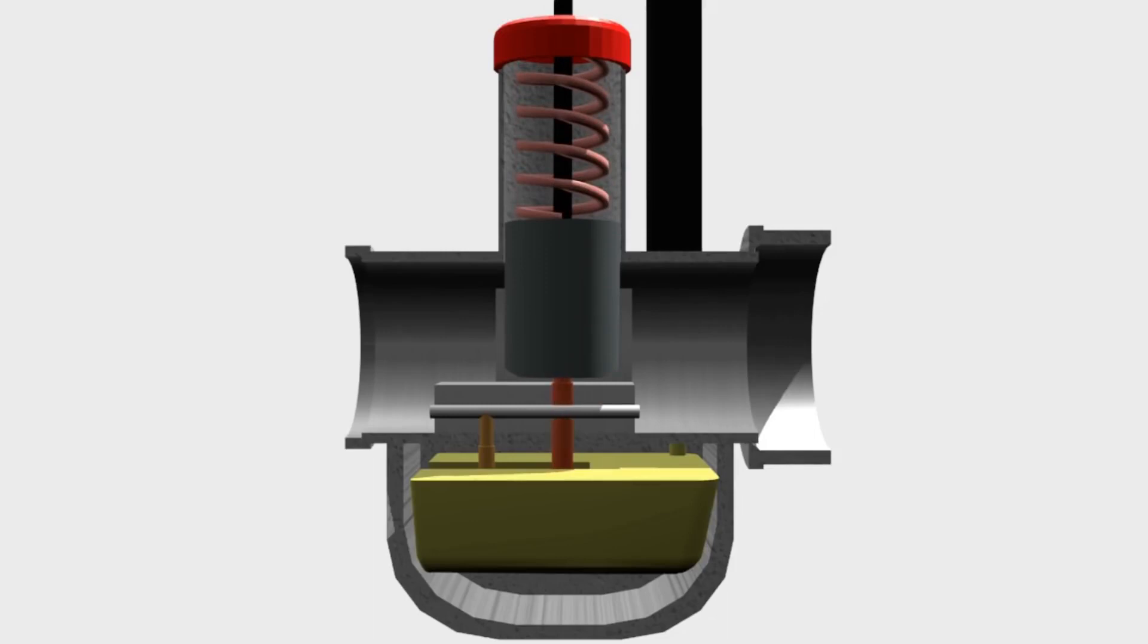Main jet. It is used to distribute fuel into the Venturi. Idle air channel. It is an additional channel to flow the air at idle RPM.